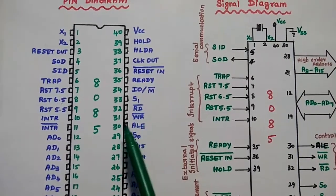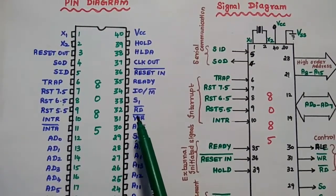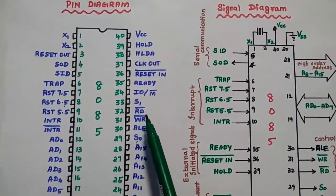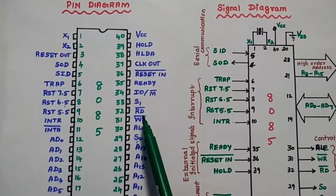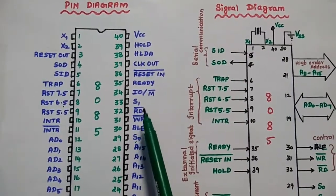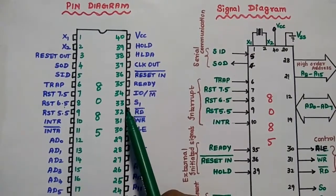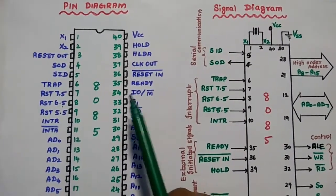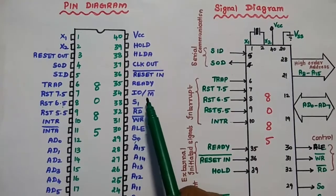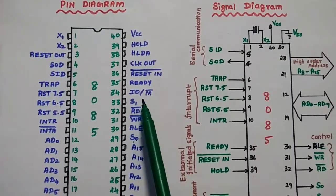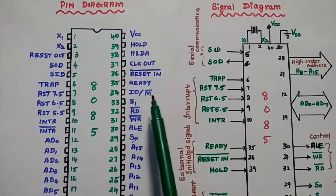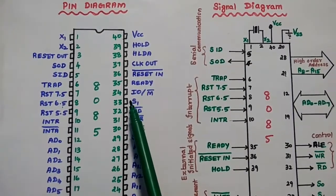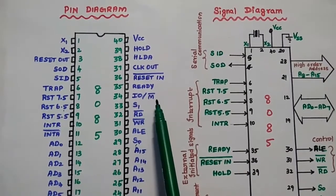The 31st pin is Write bar and the 32nd pin is Read bar. These are control signals to control the read and write operations. The 33rd pin is S1, also a status signal. The 34th pin is IO bar M bar — input/output or memory — used to define whether we are performing an input/output device operation or a memory operation.